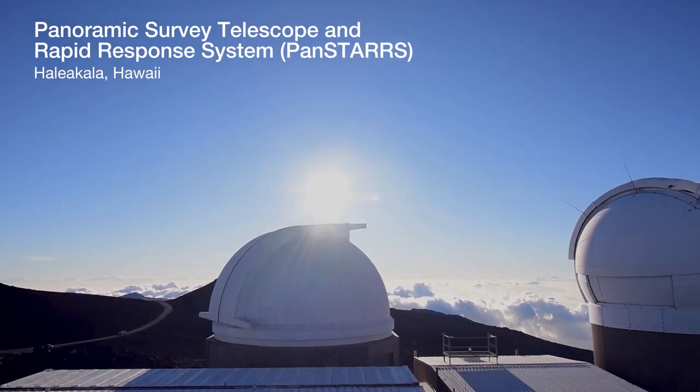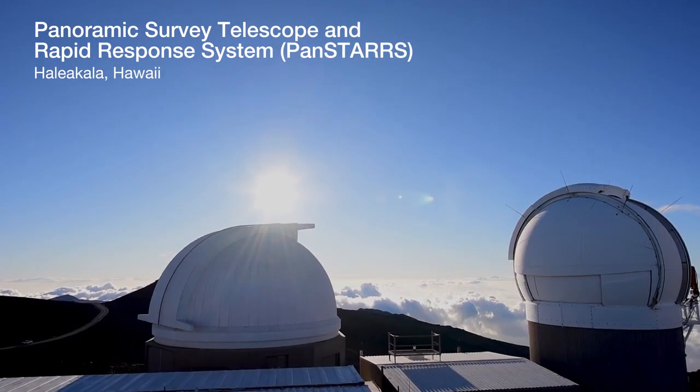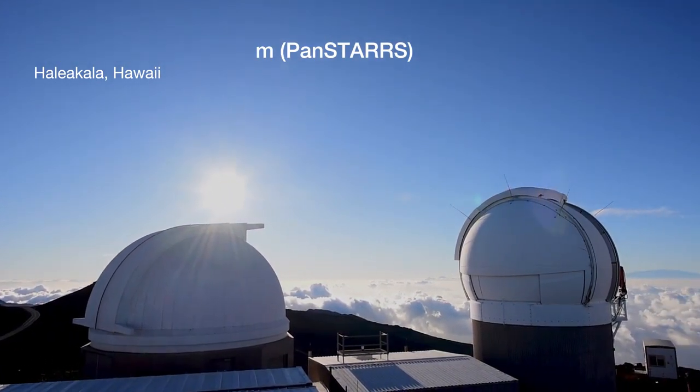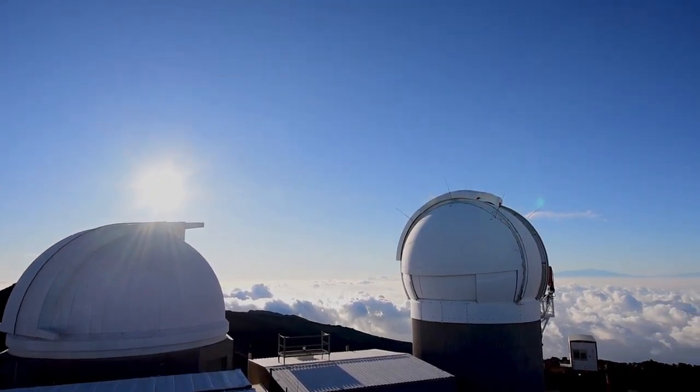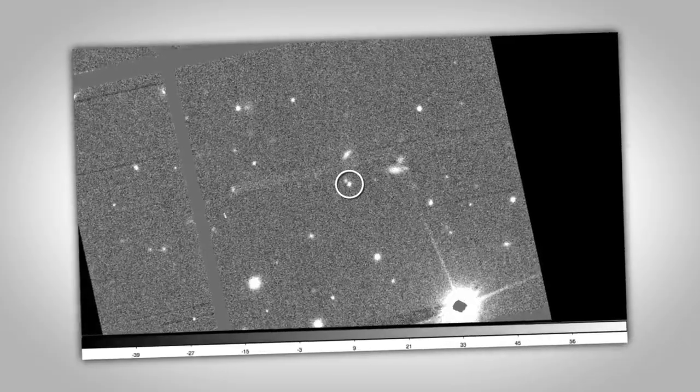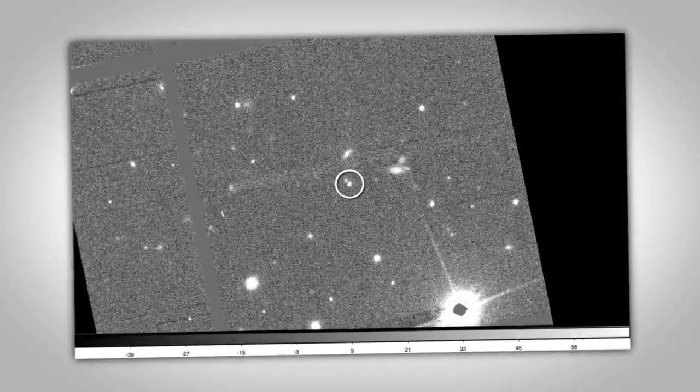We've probably seen about a million asteroids in the last seven years that Pan-STARRS has been operating. It's like picking a needle out of a haystack. We're looking for distinctive motion and when we see distinctive motion in asteroids, we report them to the Minor Planet Center.